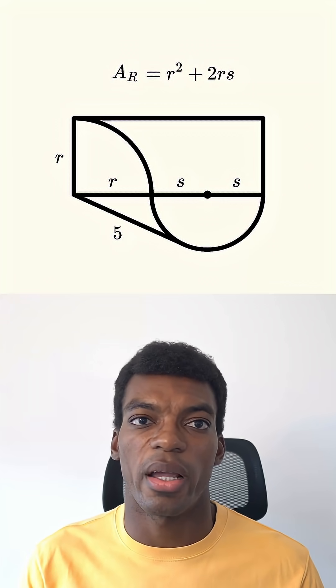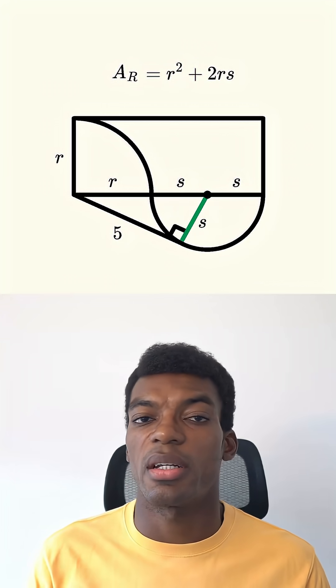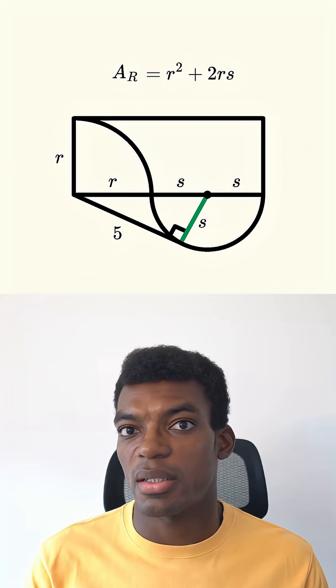Now let's move to the bottom part of the diagram. We'll draw a radius that meets the tangent line here, which means it must create a 90 degree angle. That means that this is a right triangle.